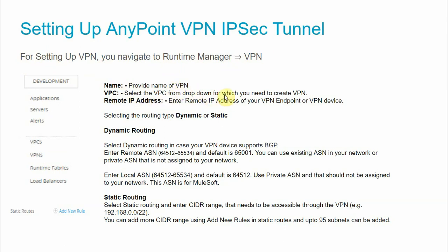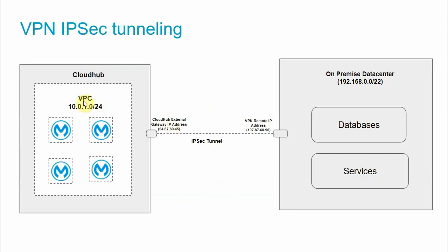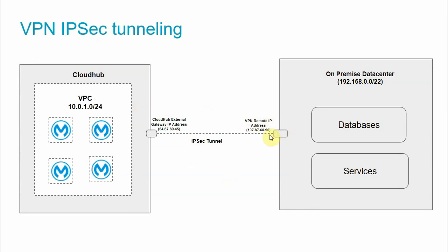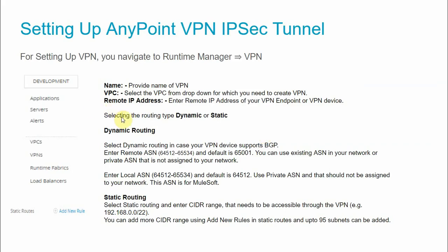Select the VPC from the drop-down — this is your VPC with its allowed CIDR block. Then enter the remote IP address, which is the remote IP of your VPN endpoint or VPN device (for example, 197.x.x.x — this is just an example). There are two types of routing: dynamic and static, which I have already described.